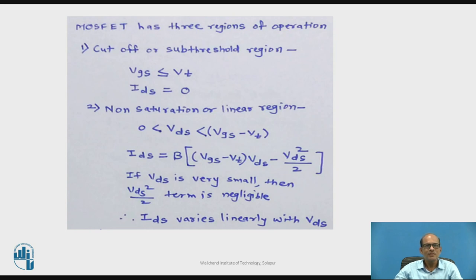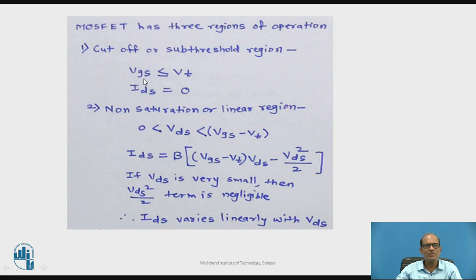This MOSFET has three regions of operation. The first is the cut-off or sub-threshold region. For the cut-off region, VGS is less than or equal to VT, and the drain current is zero — meaning when VGS is less than or equal to the threshold voltage VT, the drain current ID equals 0.